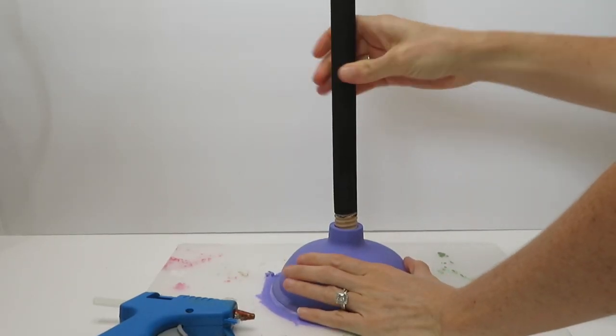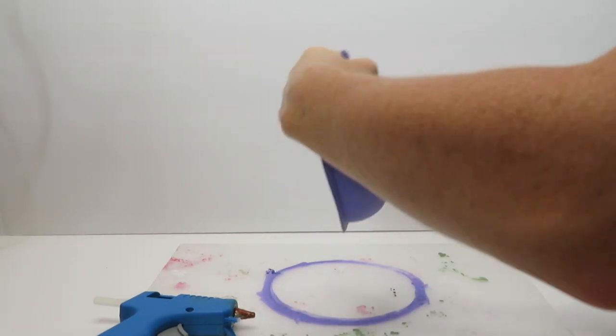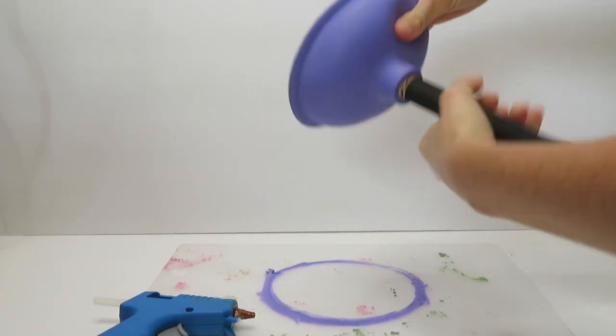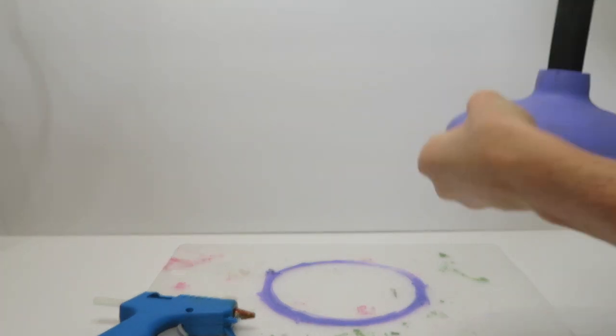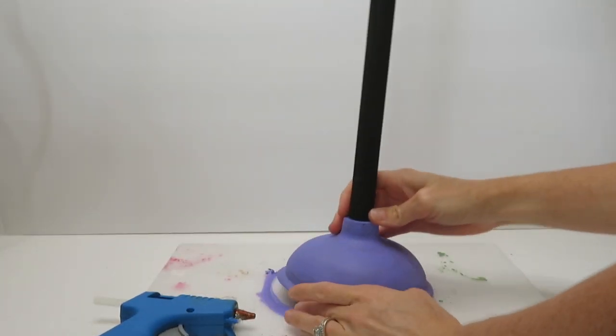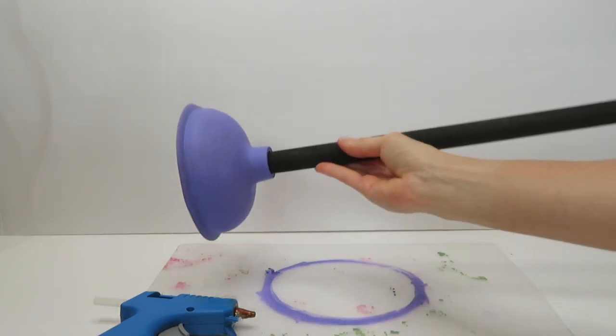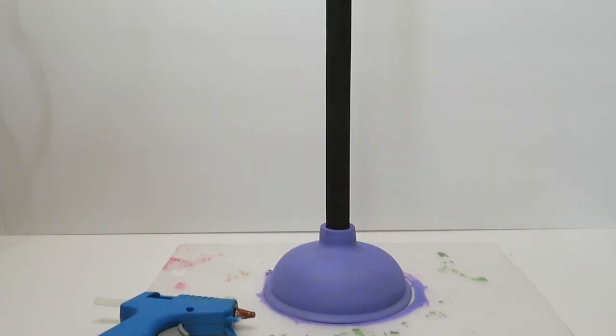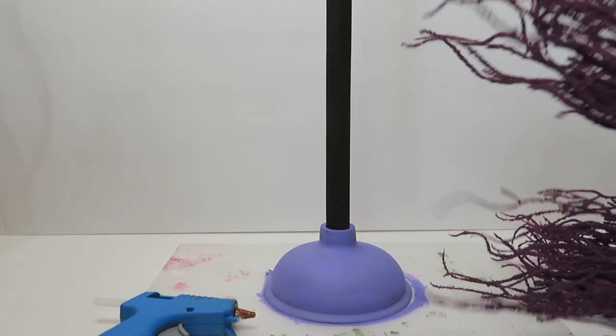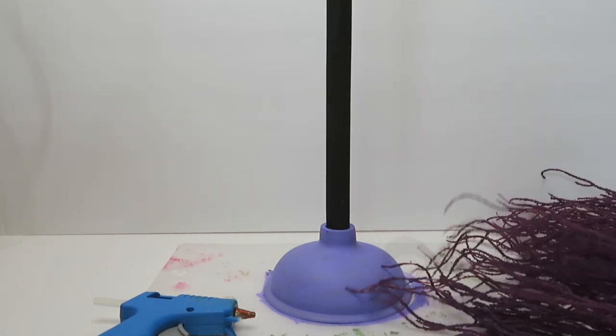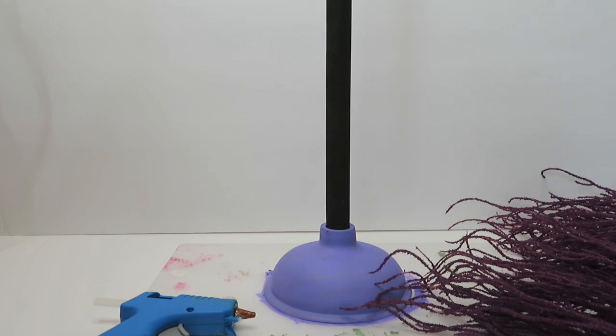After the handle of the plunger dried, I went ahead and reattached it back to the rubber part. This just helped me kind of find the shape of my broom. You can absolutely leave the stick off the rubber part if you want to. It helps the willow pieces frill out a little bit.